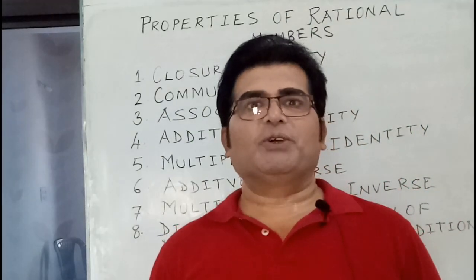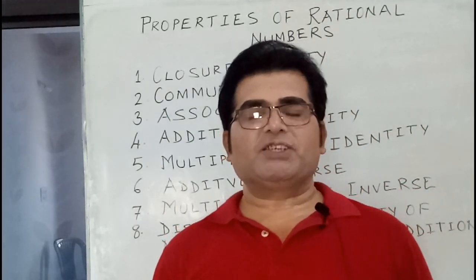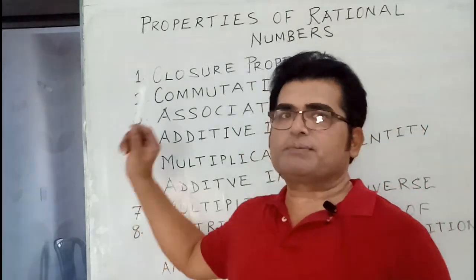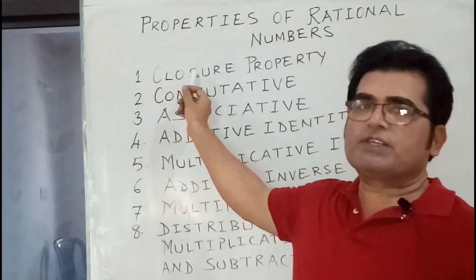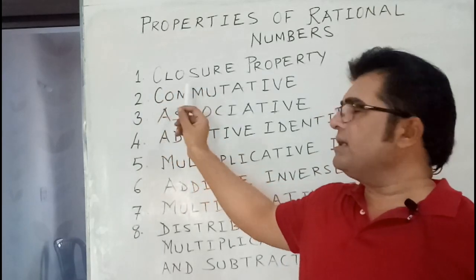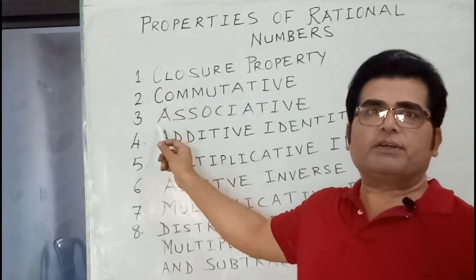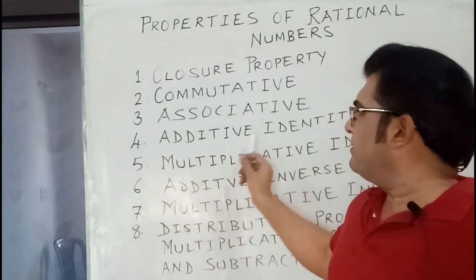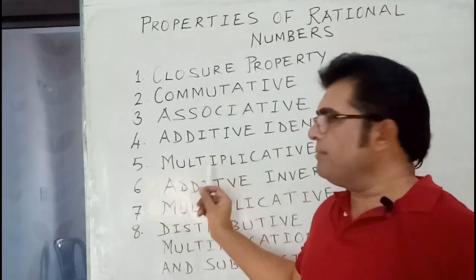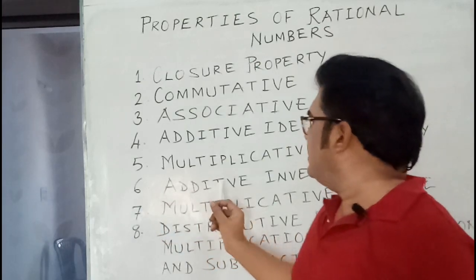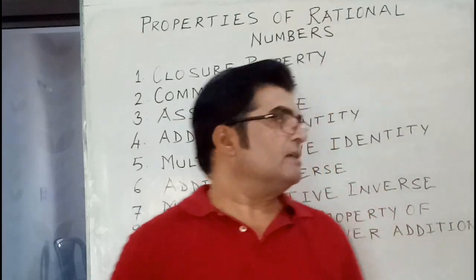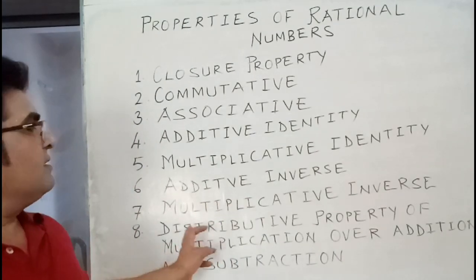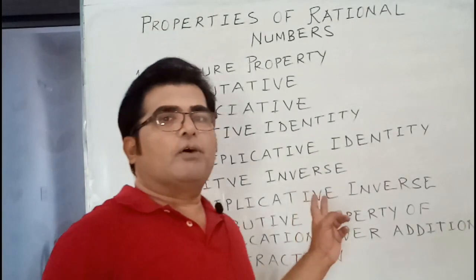Hello friends, today I'm going to explain the properties of rational numbers. The properties of rational numbers are: first, the closure property; second, commutative property; third, associative property; fourth, additive identity; fifth, multiplicative identity; sixth, additive inverse; seventh, multiplicative inverse; eighth, distributive property of multiplication over addition and subtraction.